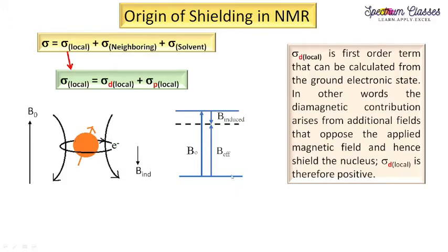Diamagnetic shielding is a first-order term that can be calculated from the ground electronic state only — meaning we only need the wave function of the ground state for the nucleus of interest. In other words, the diamagnetic contribution arises from additional fields that oppose the applied magnetic field, and hence shield the nucleus. The induced magnetic field is caused by the electrons revolving about the nucleus.